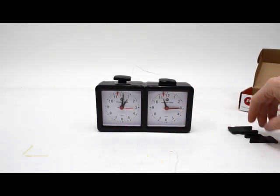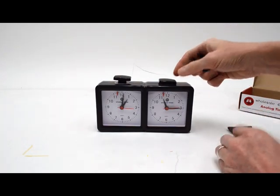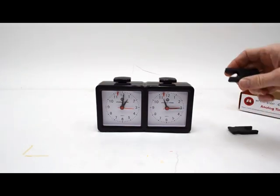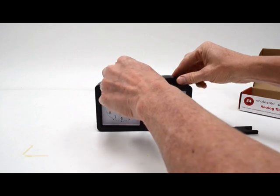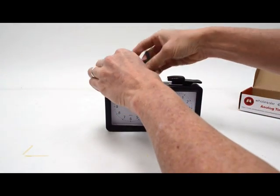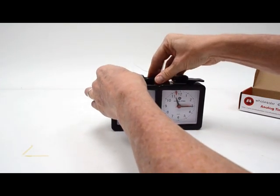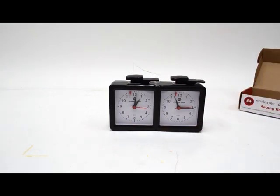Included in the box are these two stoppers, and what these are used for is once you've got the battery installed, to keep the clock from starting, you can use these stoppers, put them underneath each button, and with both buttons in that position, the clock won't start and wear down your battery.